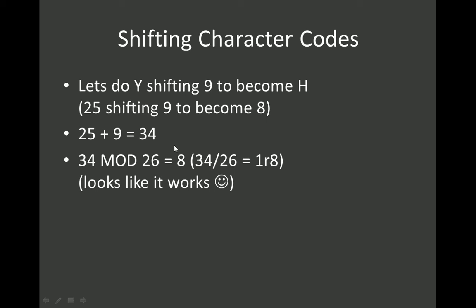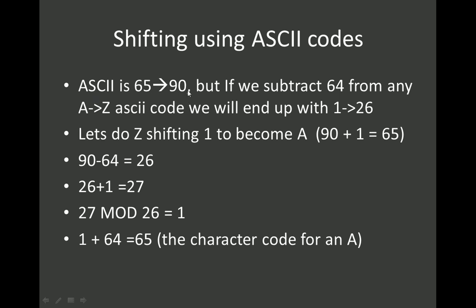Now we need to get our head around how we can actually encode that. We know that ASCII values 65 to 90 represent uppercase letters, and we want to get back to a 1-to-26 range. So we subtract 64 first — after subtracting 64, the character codes become 1 to 26. For Z shifting by 1 to become A: 90 minus 64 is 26, 26 plus 1 is 27, 27 mod 26 is 1, then we add 64 back to get 65. Subtracting at the start and adding at the end shifts between a 1-to-26 character code and ASCII.